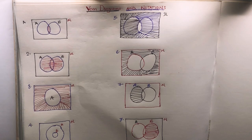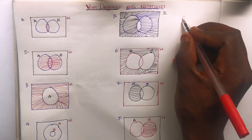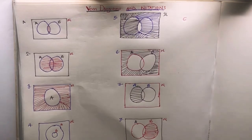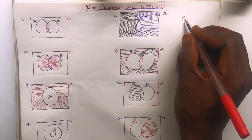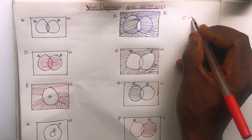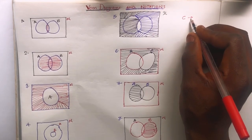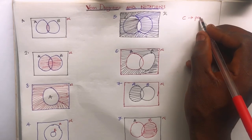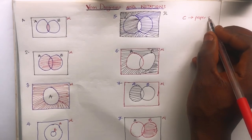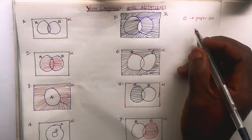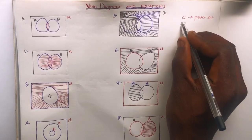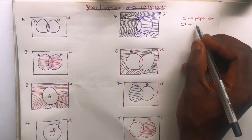Let me give you an example. If you're having a symbol like this, what do you think it is? This is actually a proper subset symbol — let's call it proper subset. And if you have this kind of sign, this is known as a superset.